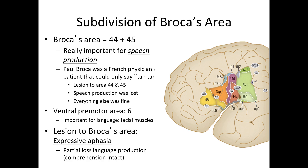Here you can see an anatomical map of Broca's area, which includes Brodmann areas 44 and 45 with all their subdivisions. It has been suggested that regions around there are also involved in language, including area 6, shown in green. Area 6 is the ventral pre-motor area, which is involved with facial muscles.